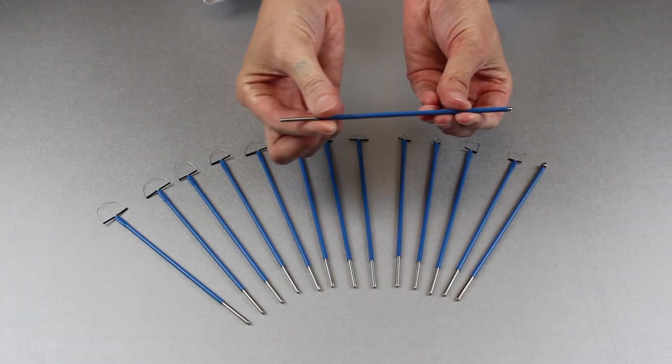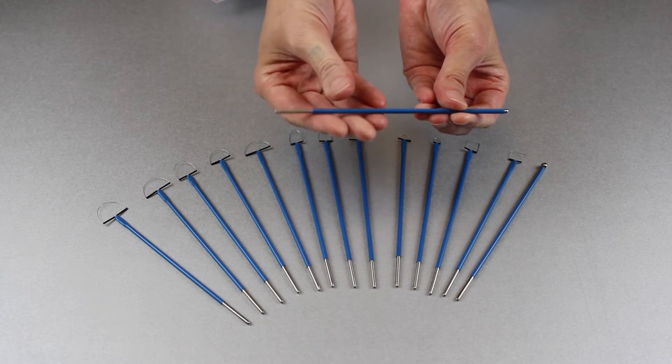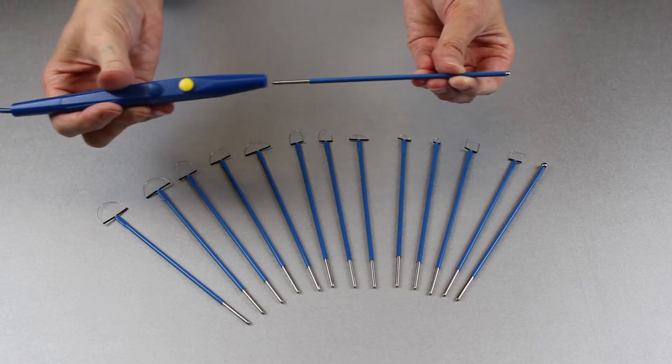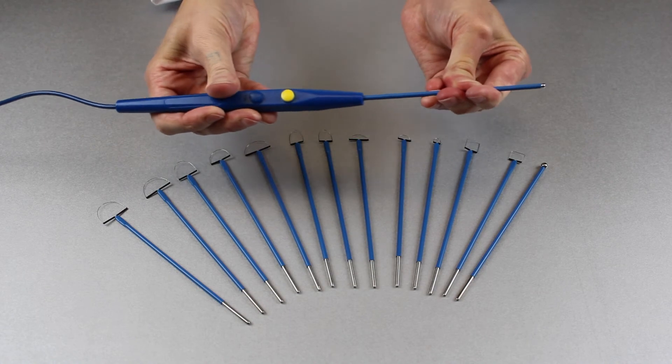Thomas's electrodes have a standard shaft diameter of 3 32nds of an inch, which makes them compatible with industry standard wands.